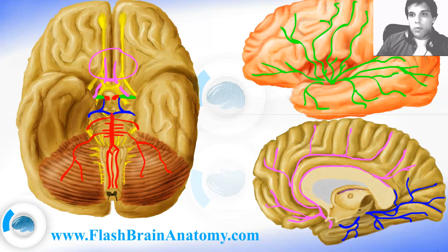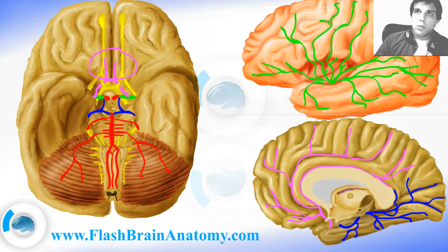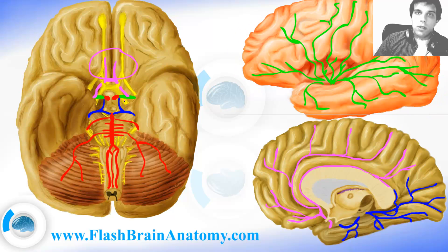So there you go — I just explained how the brain is supplied with blood. We have blood coming from the internal carotid artery, supplying mostly the part of the brain where the anterior cerebral artery goes, and also supplying the lateral side of the brain where the middle cerebral artery goes. We had the two vertebral arteries coming through the foramen magnum, joining to form the basilar artery, and then supplying the posterior cerebral artery.